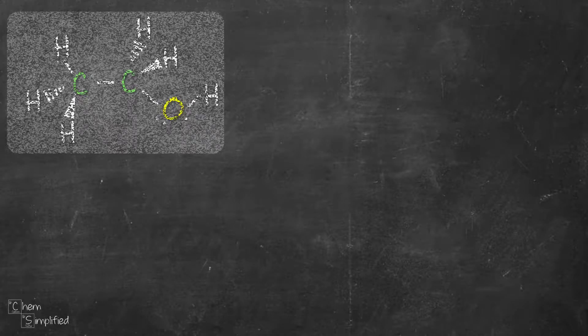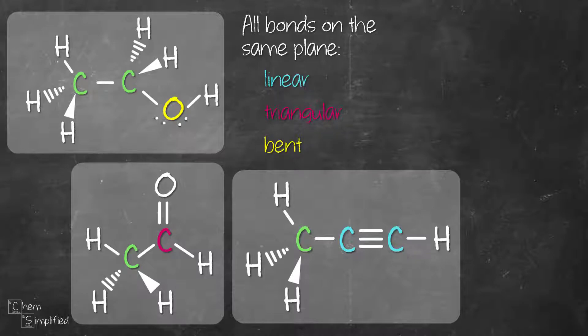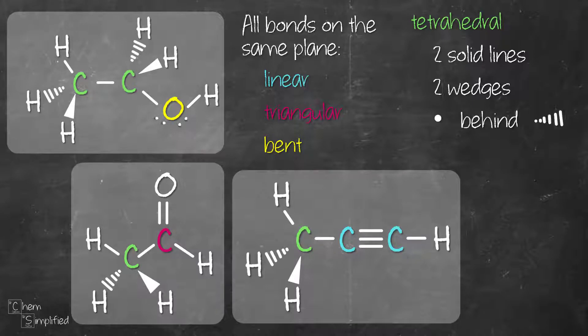Quick recap. Here are the three organic compounds that we've just drawn in 3D. Basically, linear, triangular planar, and bent geometries will all have their bonds on the same plane. Tetrahedral, on the other hand, will have two bonds on the same plane and then another two sticking out of the plane. The one pointing behind the plane is drawn as a dash wedge. The one pointing to the front of the plane is drawn as a solid wedge. With that, we're done going through how to draw organic compounds in 3D.